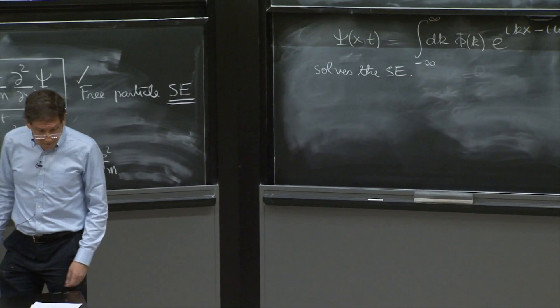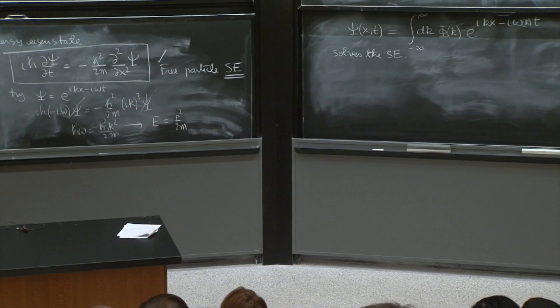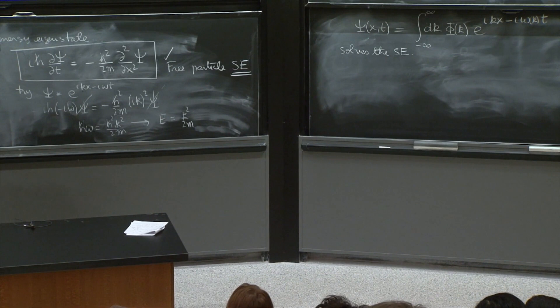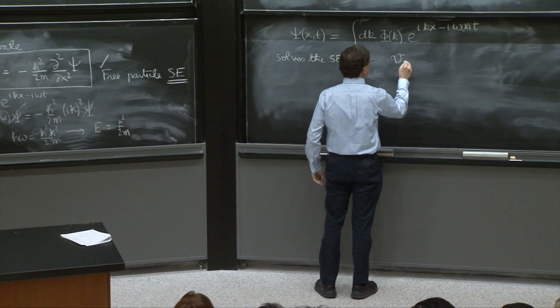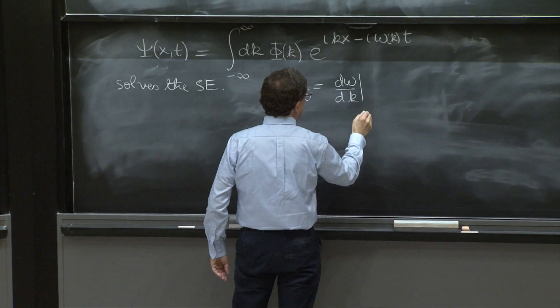So this is very general. And for this, applies what we said yesterday, talking about the velocity of the waves. And this wave we proved yesterday that moves with a group velocity, v group, which was equal to d omega dk at some k0, if this is localized at k0.